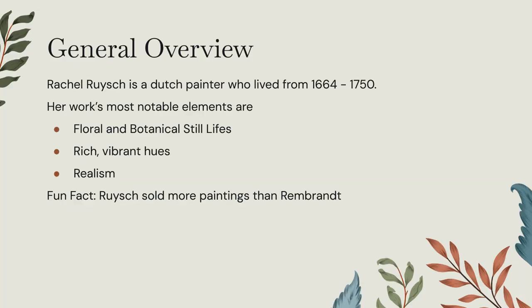Rachel Roche is a Dutch painter who lived from 1664 to 1750. Her work's most notable elements are floral and botanical still lives, rich, vibrant hues, and realism. A fun fact about Rachel Roche is that she sold more paintings than Rembrandt in her time.